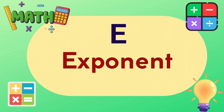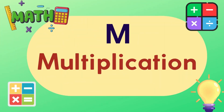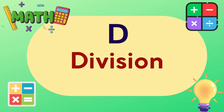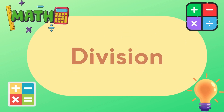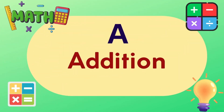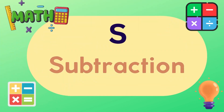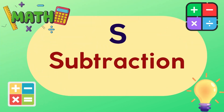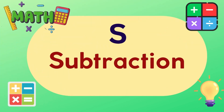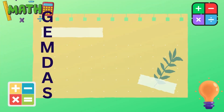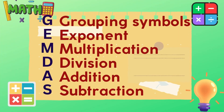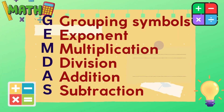E for exponent, M for multiplication, D for division, A for addition, and S for subtraction. Always remember that we need to perform first all those operations inside the grouping symbols,